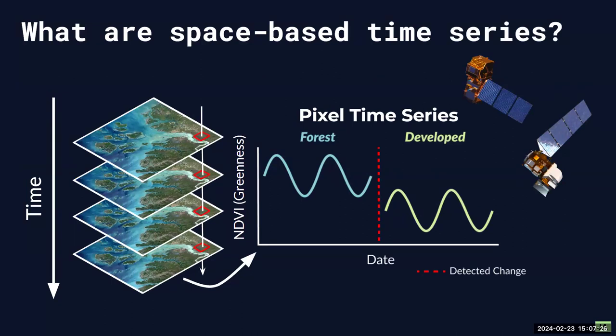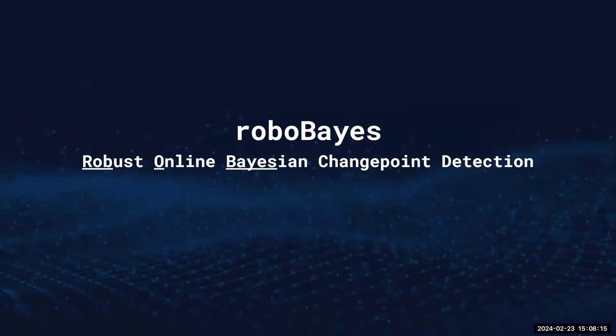RoboBayes is a time-series-based change detection algorithm. To get from satellite images to time series: if you look at a series of satellite images collected over time for a specific region and follow an individual pixel, you can calculate something like the normalized difference vegetation index (NDVI), which is a remote sensing index used to look at greenness or the density of vegetation within a pixel. If this pixel is forested, you see a high NDVI value with a nice harmonic trend reflecting seasonality. You see an abrupt shift when that pixel gets developed and vegetation gets cleared, and this shift in land cover states is exactly what we want to target with our change detection algorithm.